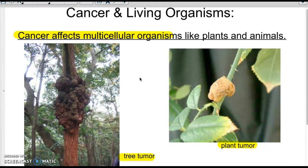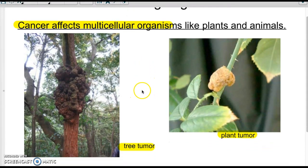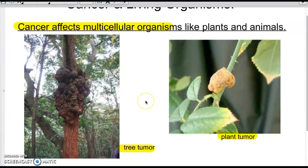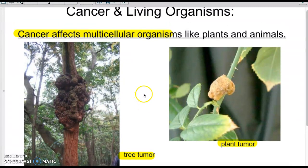And so don't forget that cancer can affect multicellular organisms. So humans are not the only ones that have cancer. Animals can too. Even plants. Here's examples of some tree tumors and some plant tumors that can also be affecting other organisms as well.